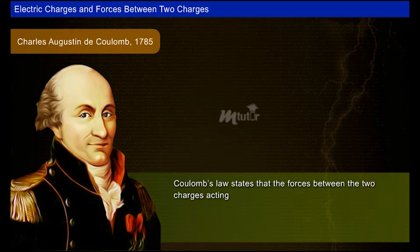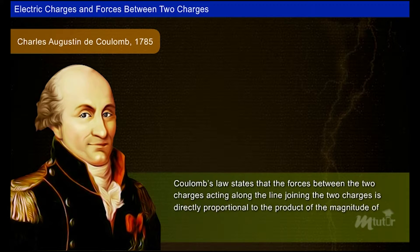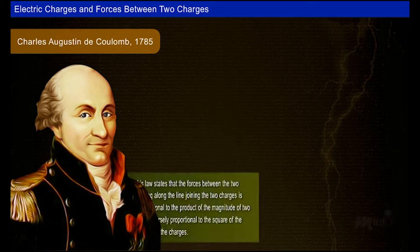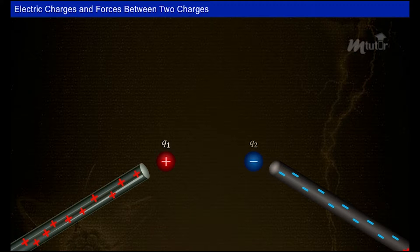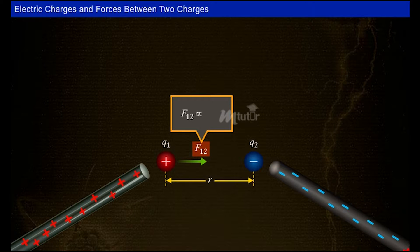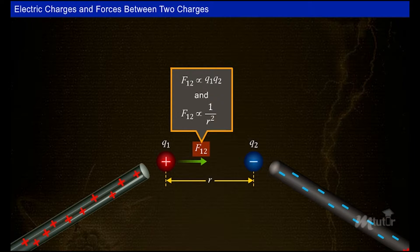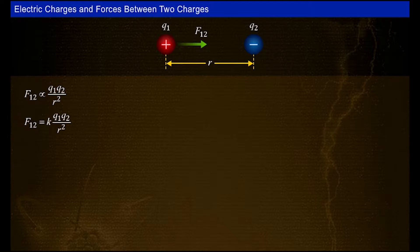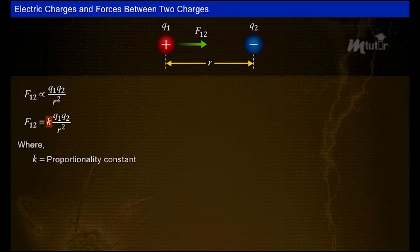He stated that the force between two charges, acting along the line joining them, is directly proportional to the product of the magnitude of the two charges and inversely proportional to the square of the distance between the charges. For a system of two charges q1 and q2 separated by a distance r meters in vacuum, the force is given by: F12 = k × q1 × q2 / r².